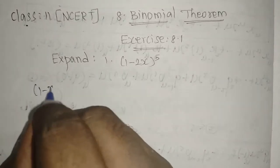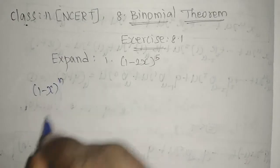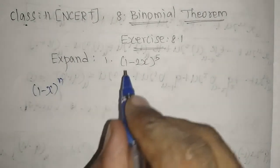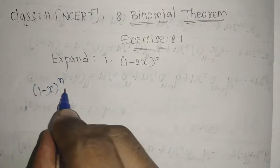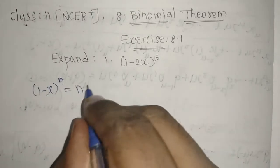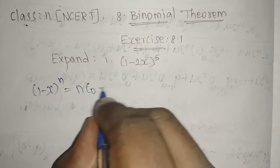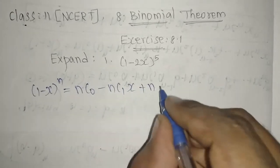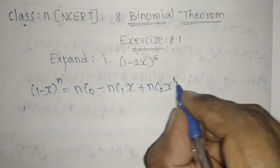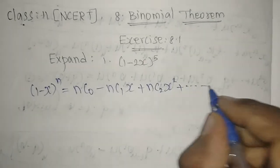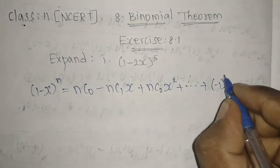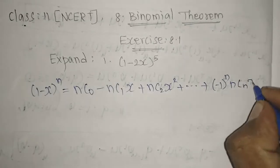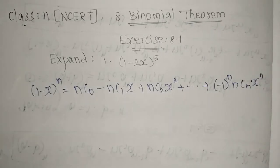Here we have 2x instead of x — that is the difference. But the first term is 1, so this formula is applicable: (1-x)^n = nC0 minus nC1·x plus nC2·x squared and so on, up to plus/minus nCn·x^n. This is the formula we are going to use.